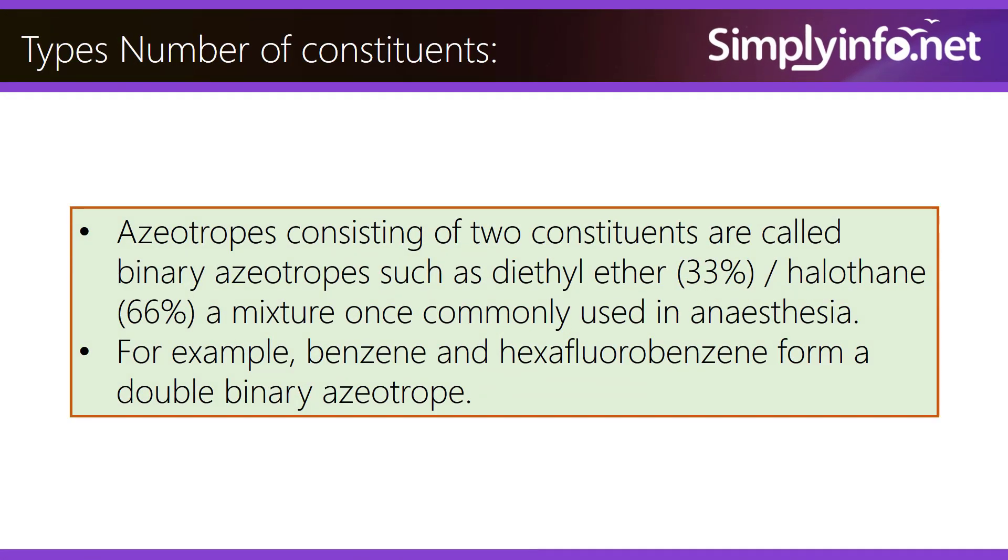Azeotropes can also be classified by the number of constituents. Binary azeotropes consist of two constituents, such as diethyl ether 33% and halothane 66%, a mixture once commonly used in anesthesia. Benzene and hexafluorobenzene form a double binary azeotrope.